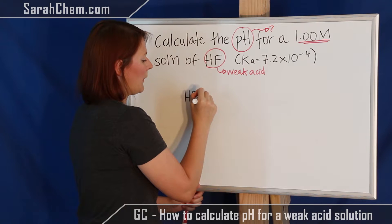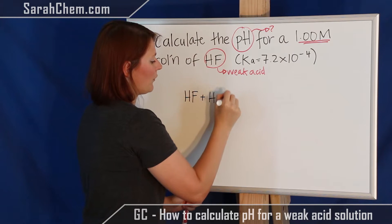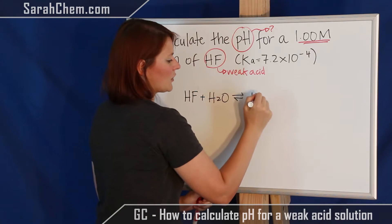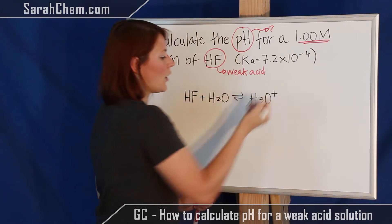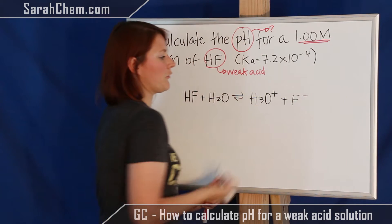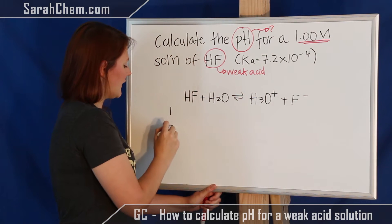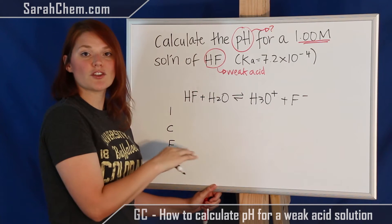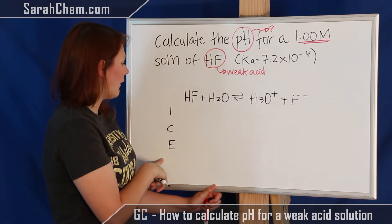So the first thing in an ICE chart is to write up the reaction. So we have HF plus H2O is in equilibrium with—so we know this is the acid, so that will be handed over to water which is behaving like the base, and we have F- left over. And then we write ICE. So I is for initial concentrations, C is for the change, and E is for the equilibrium value.